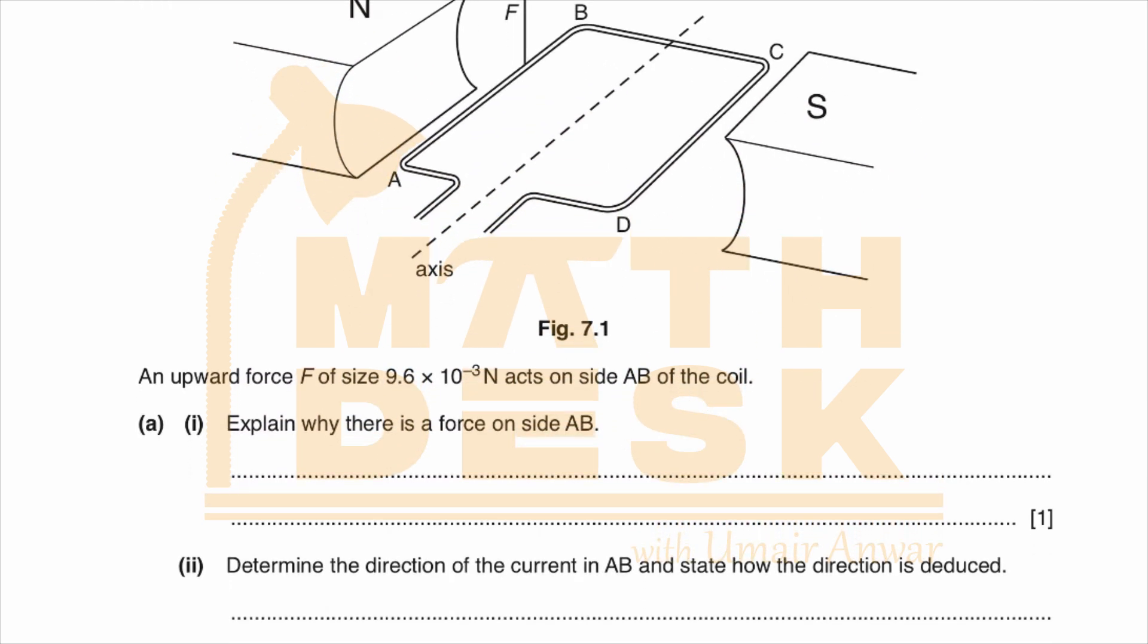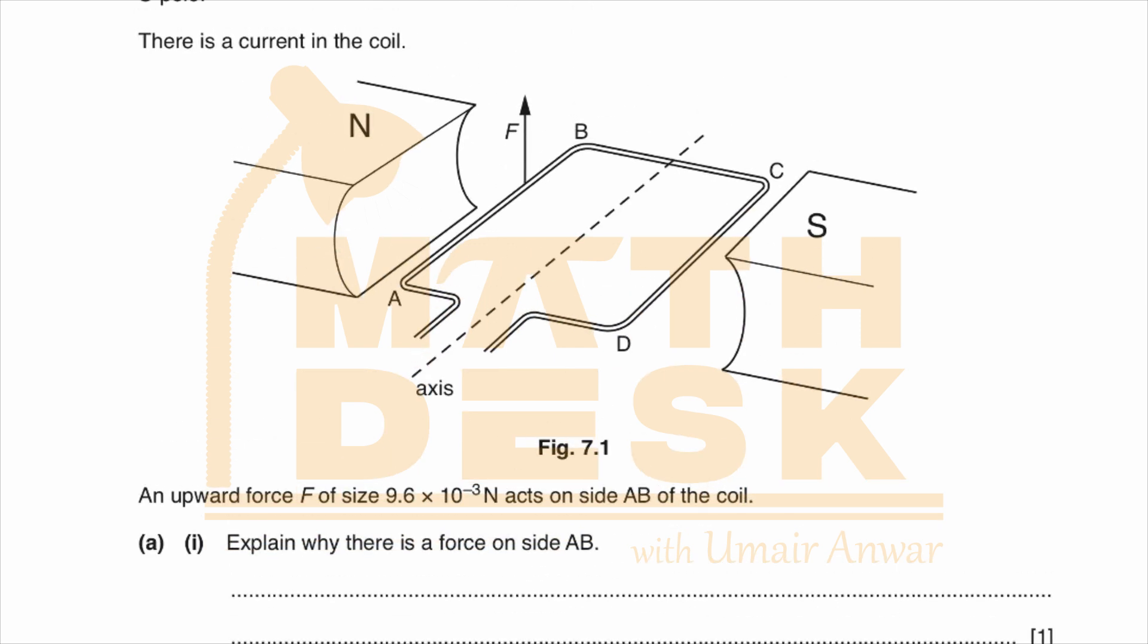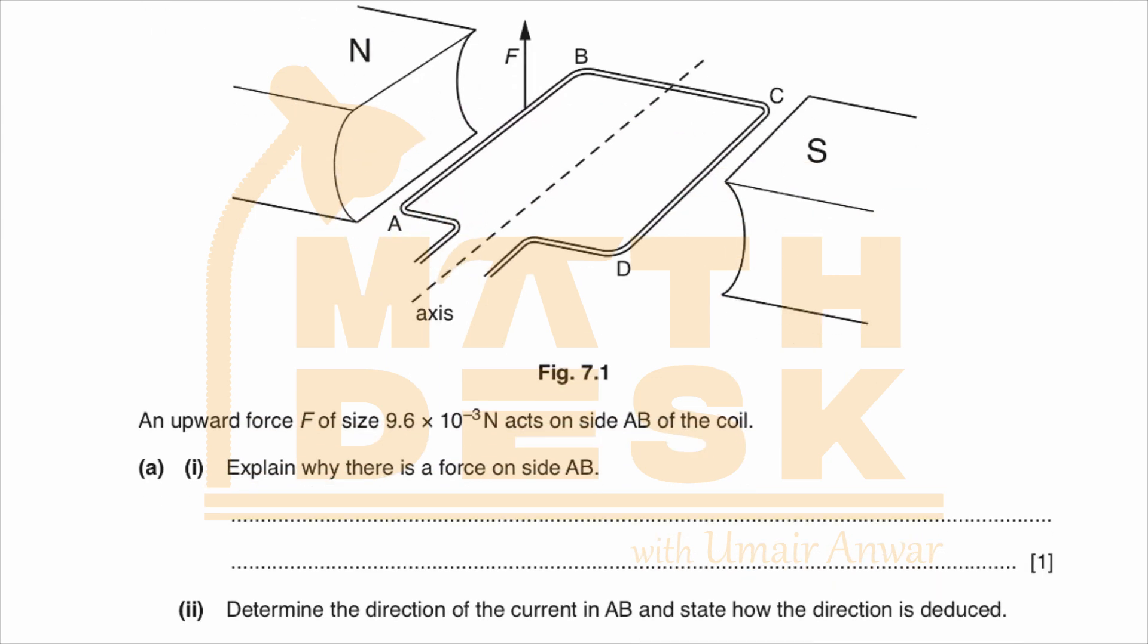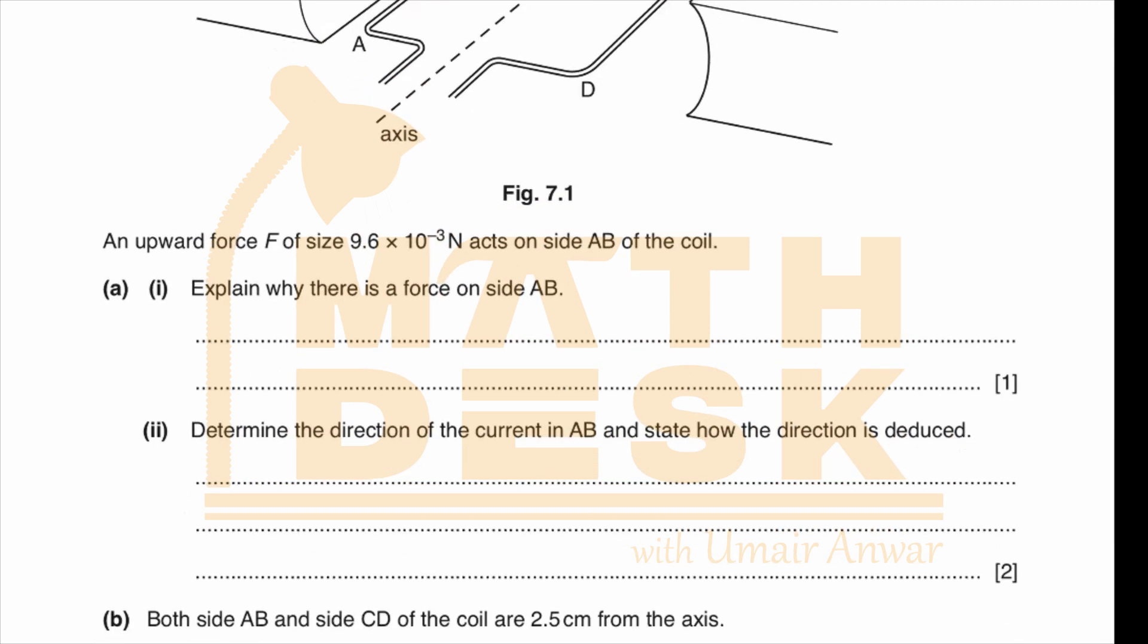Whenever a current-carrying coil or conductor is placed in a magnetic field, the current-carrying conductor produces its own magnetic field, and that magnetic field interacts with the other magnetic field. The repulsive and attractive forces act on the coil or conductor, and the conductor experiences a force.